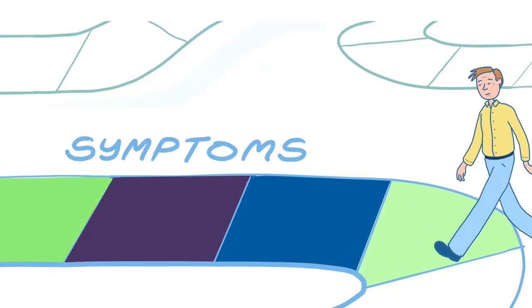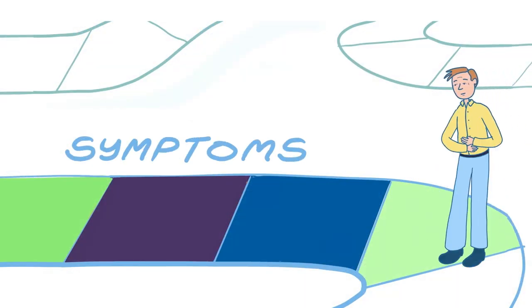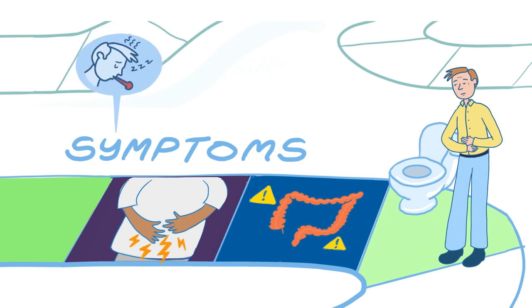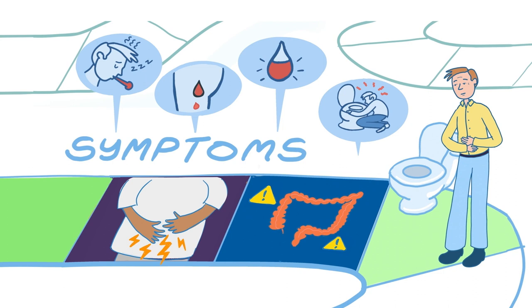Typically, the journey starts with symptoms that might include a combination of diarrhea, bowel urgency, incontinence, abdominal pain, cramping, fever, rectal bleeding, anemia, nausea, and vomiting.